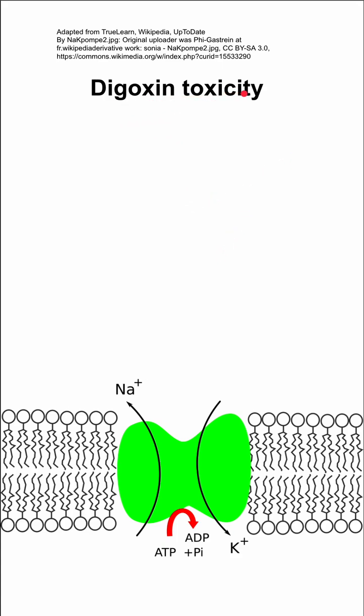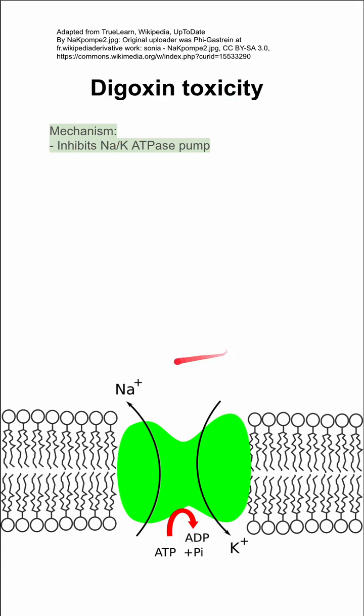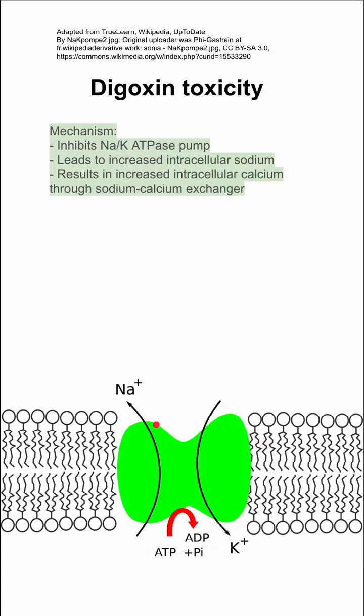Here are some notes on digoxin toxicity. The mechanism of toxicity and the mechanism of action is that digoxin inhibits the sodium-potassium ATPase pump, which is depicted down here. This leads to increased intracellular sodium, which is then exchanged for calcium, leading to increased intracellular calcium through the calcium-sodium exchanger.